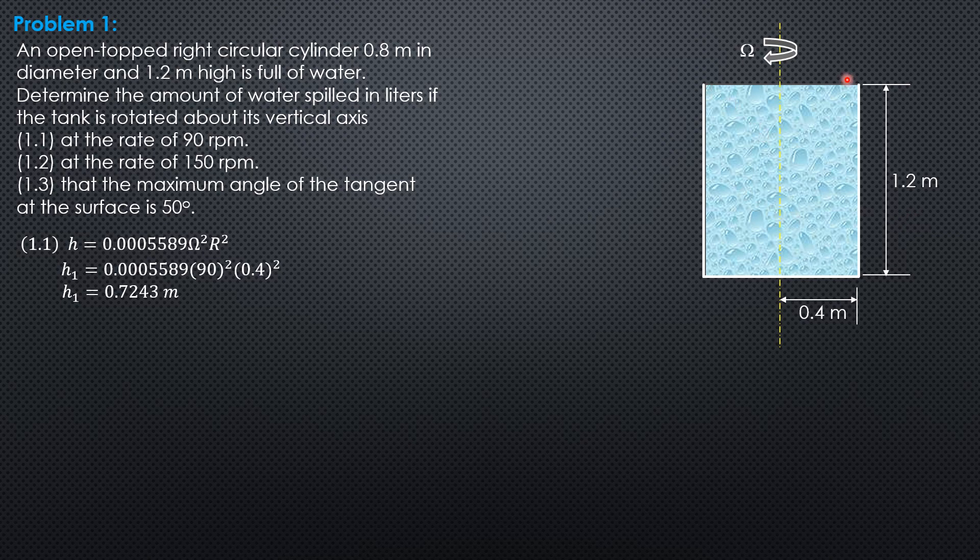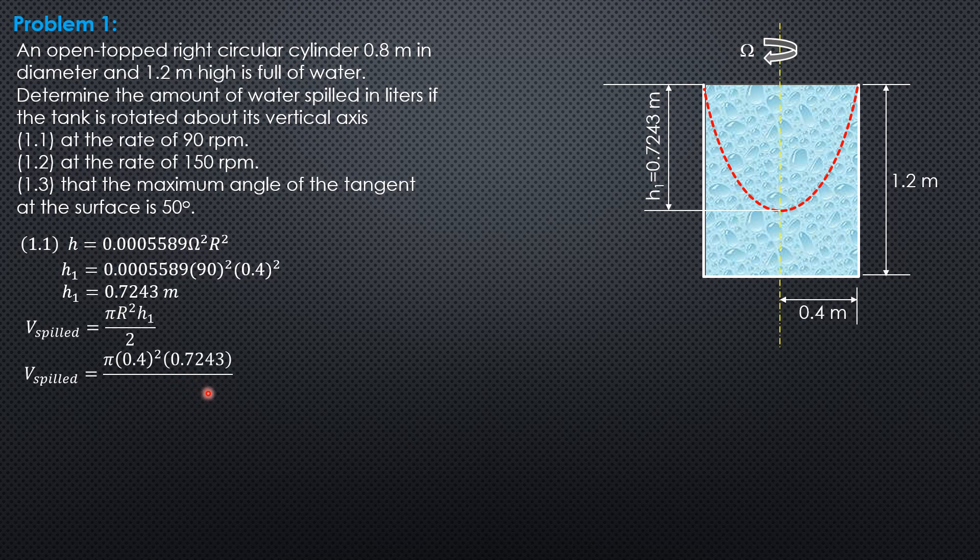So the imaginary parabolic surface would look as long and therefore this will be replaced by air and this is the volume spilled. So the volume of paraboloid is pi radius square times height H1 divided by 2. Pi over 2 radius 0.4 square times 0.7243 over pi over 2 radius square times H1. That's the volume of water spilled. So substitute. So pi times 0.4 square times 0.7243 over 2 times 1,000 to convert it to liters. So volume spilled in part 1 is 182 liters.